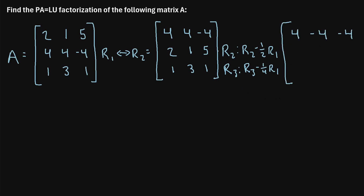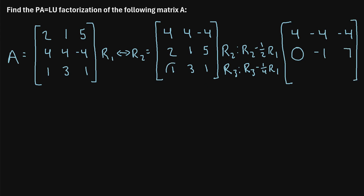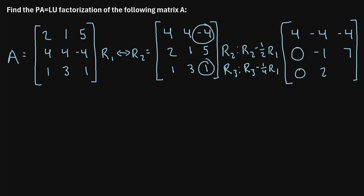After performing these row operations, the first row stays unchanged. In row two: two minus one half of four is zero; one minus one half of four is one minus two, giving negative one; and five minus one half of negative four is five plus two, which is seven. In row three: one minus one fourth of four is zero; three minus one fourth of four is three minus one, which is two; and one minus one fourth of negative one is one plus one, which is also two.